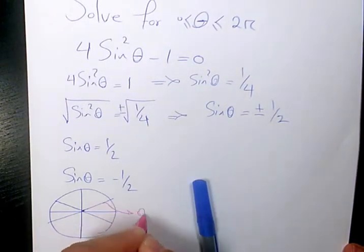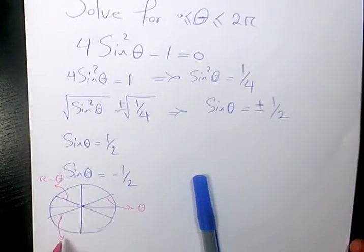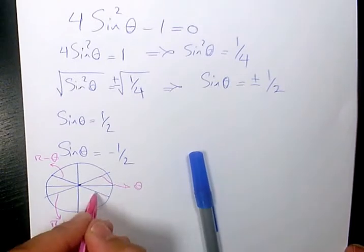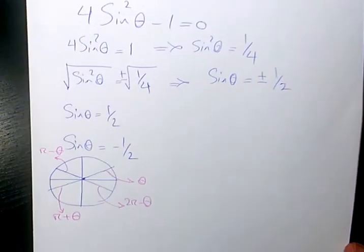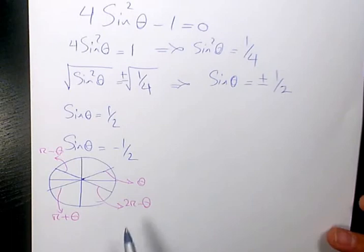This one is going to be pi minus theta for quadrant 2. Quadrant 3 is going to be pi plus theta, and here we have 2 pi minus theta. So that's how you find out the relationship between different angles in different quadrants.